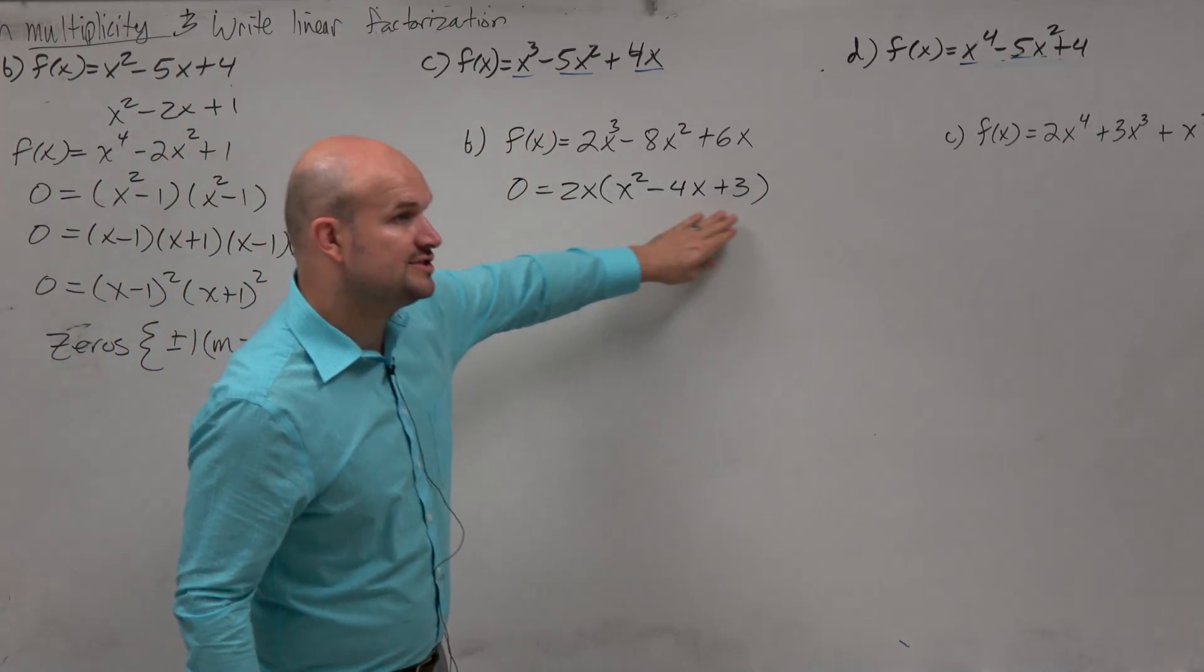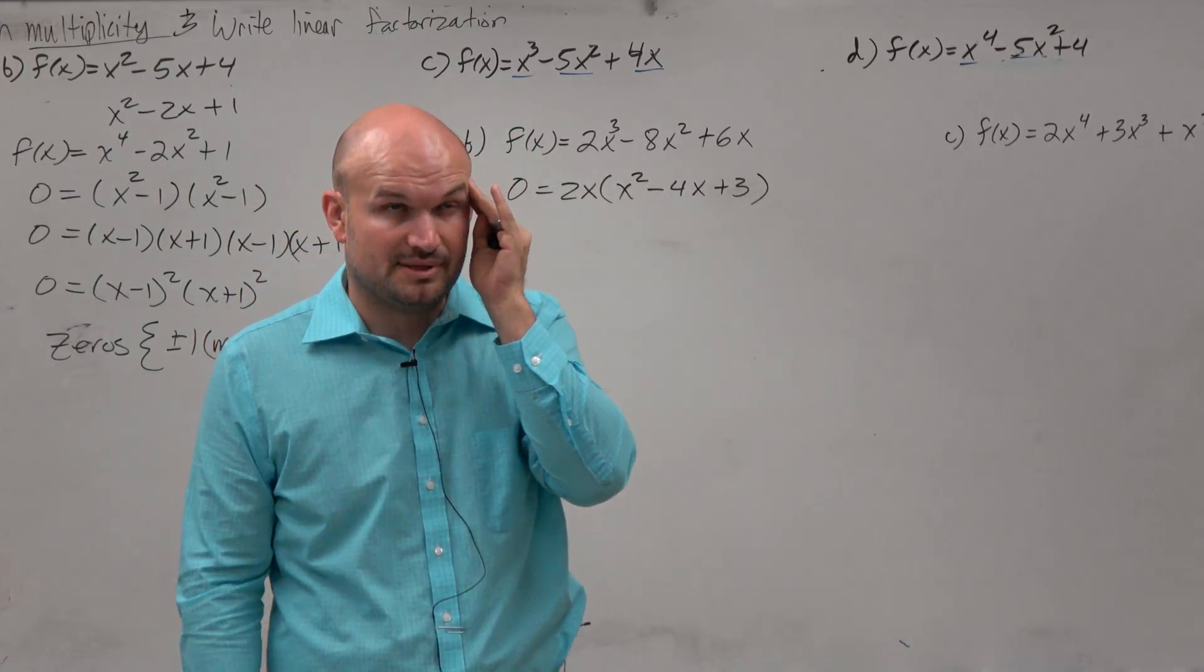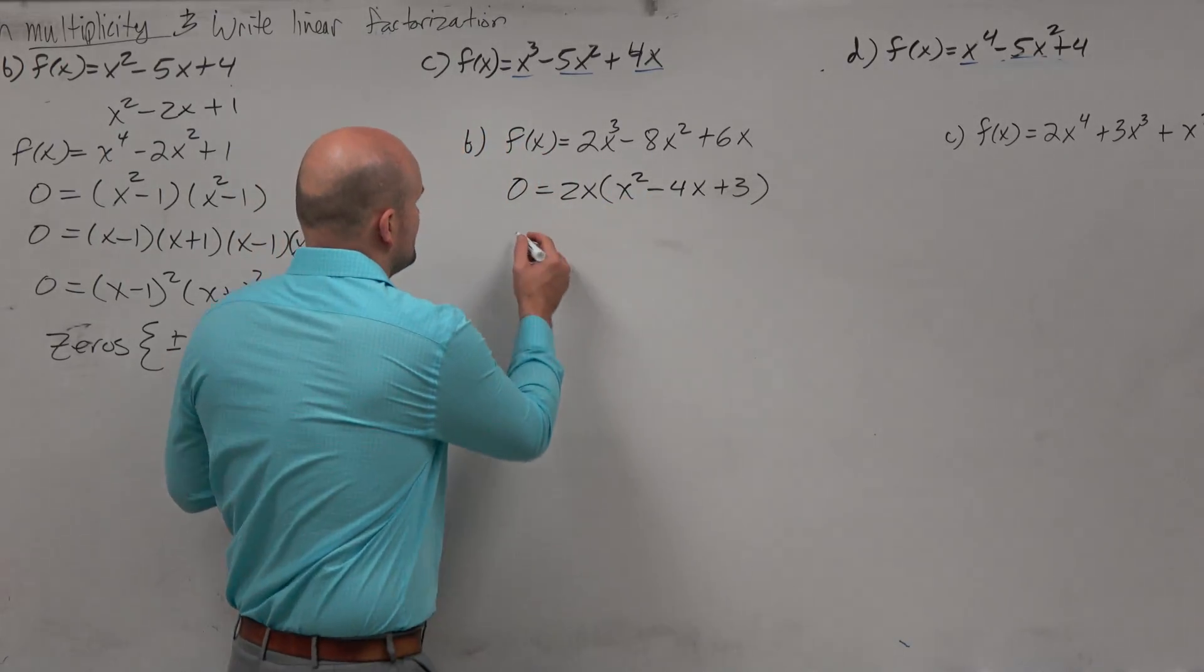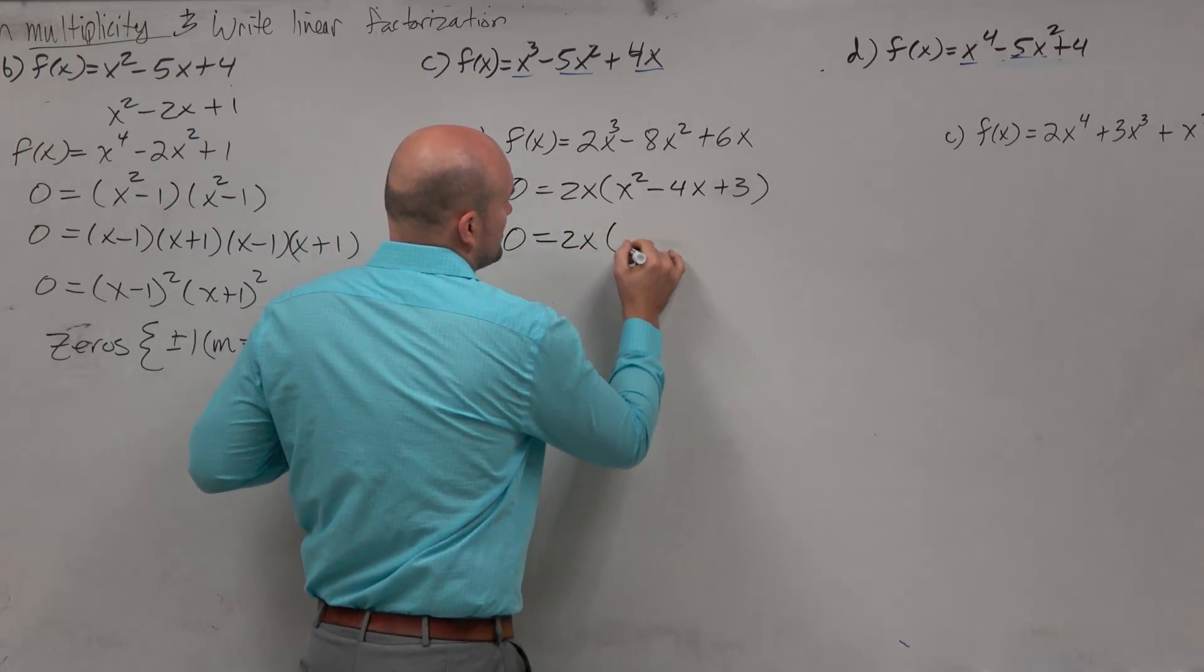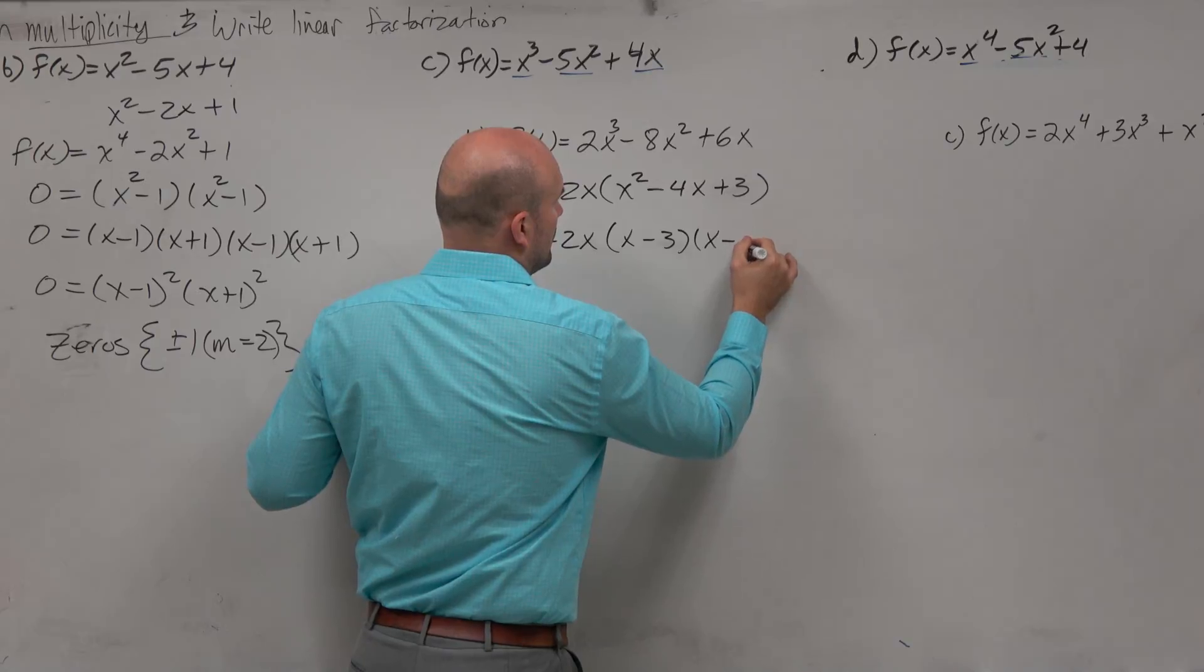Well again, I don't want to use the zero product property until I factor this down. So again, I'm thinking to myself, what two numbers multiply to give me 3, add to give me negative 4? So 0 equals 2x times x minus 3 times x minus 1.